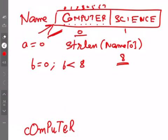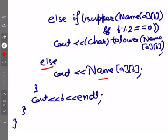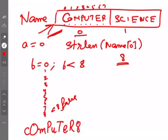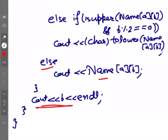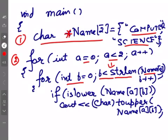The inner loop keeps running until b becomes 8. When b=8, the condition 8<8 is false and the loop stops. After the inner loop, it executes cout<<b, printing the value 8, followed by endl which moves to the next line.